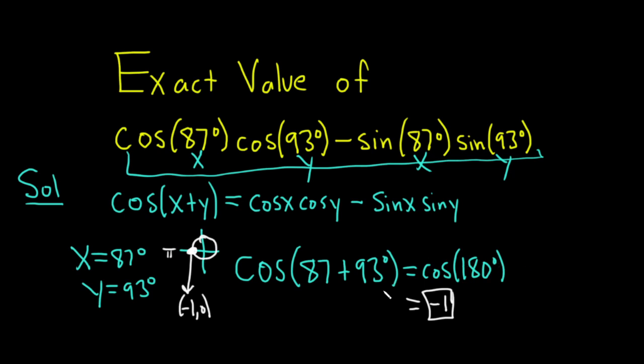So 180 is the same as pi. You just think about the unit circle—what is the x-coordinate at pi? The x-coordinate is negative 1. Therefore, cosine of 180 equals negative 1. Good luck.